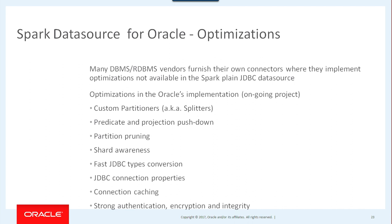These are all the optimizations we've been injecting into the product. The most important are the custom partitioners and predicate pushdown, projection pushdown — for example, when you select a subset of columns from a table, we need to push down that column selection, which is called the projection. And the predicate, the WHERE clause, and partition pruning.